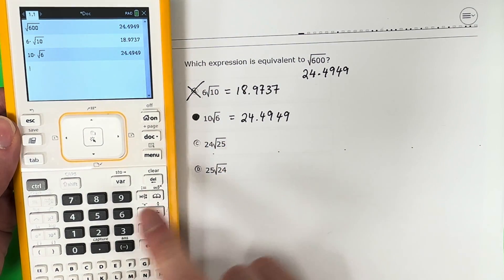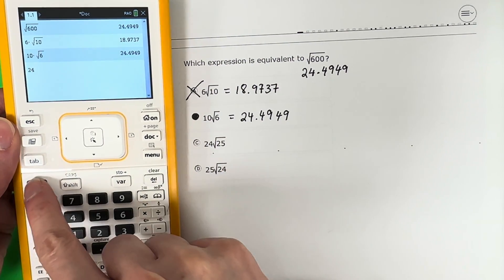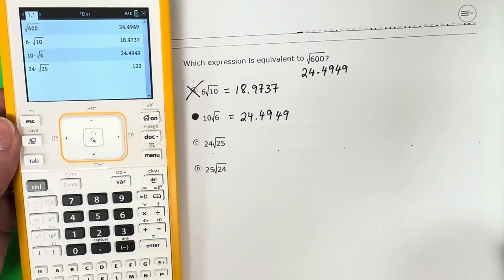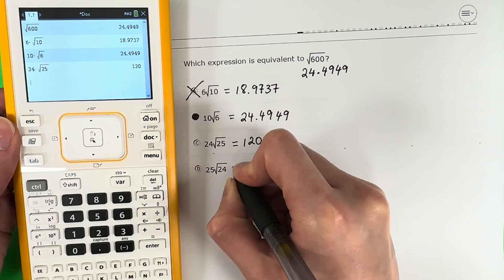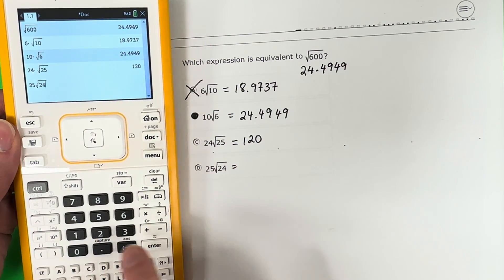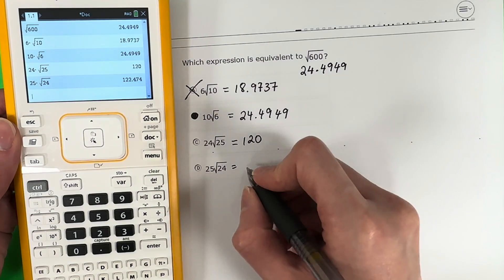Let's practice one more. 24, control, x squared, 25. Completely different. Last one. 25, control, x squared, 24. Again, completely different.